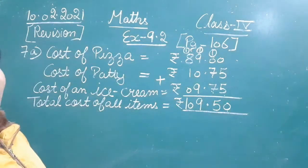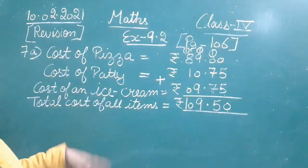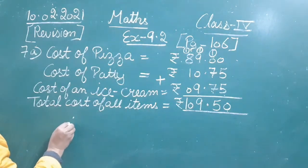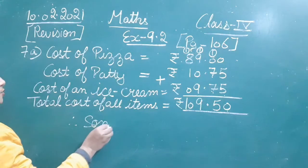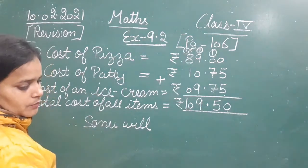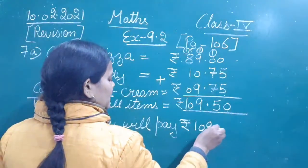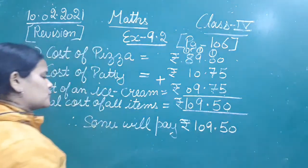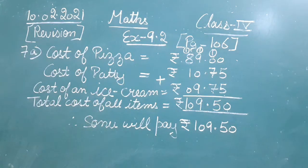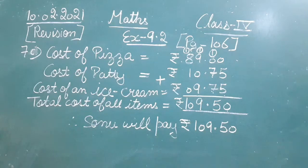So this much amount will be paid by Sonu for the items he purchased — a pizza, a patty and an ice cream. Therefore, Sonu will pay rupees 109 and 50 paise. This is the C part of question number 7. You can pause here and note it down in your notebook.